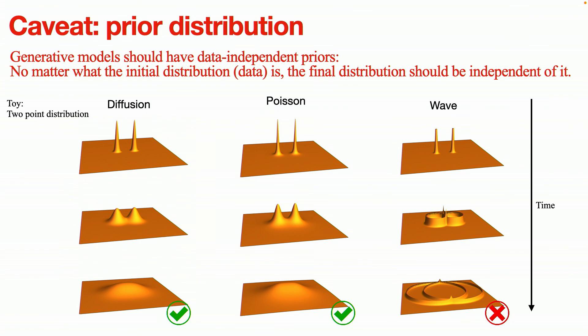For generative models, you start from a complicated shaped data distribution at first, and then you have some forward process that messes up the distribution. In diffusion model, you start from some spiky distribution, it finally becomes a large Gaussian blob. The same is similar for Poisson, you start from some spiky distribution, you finally got some blurry distribution. So that would be your prior distribution, meaning that your prior distribution is independent of your data distribution, but that is not true for the wave equation.